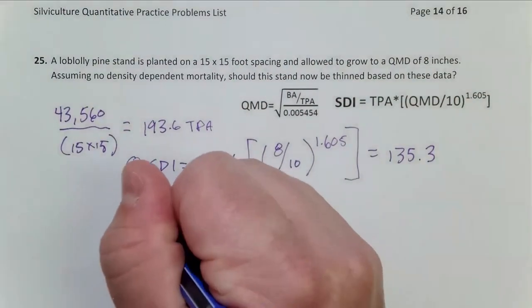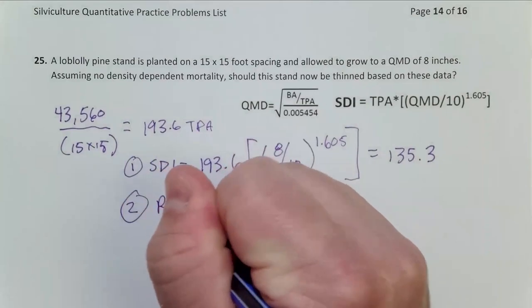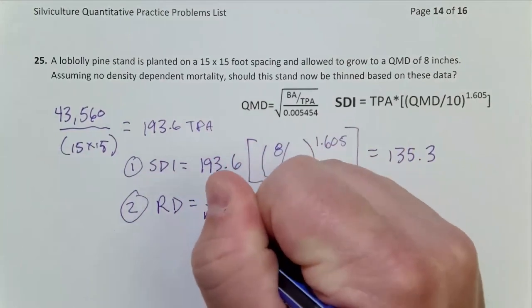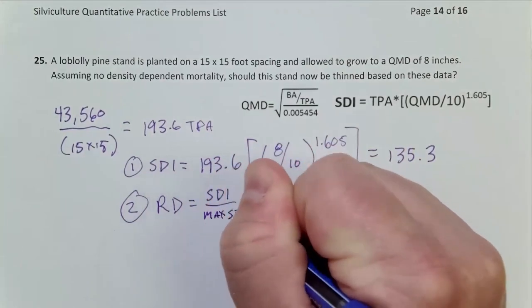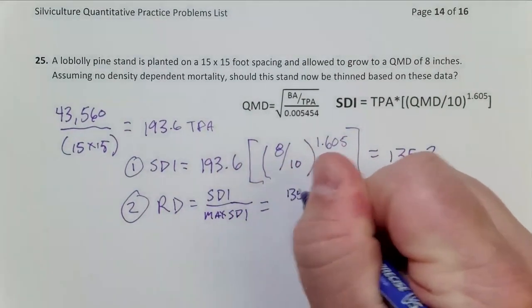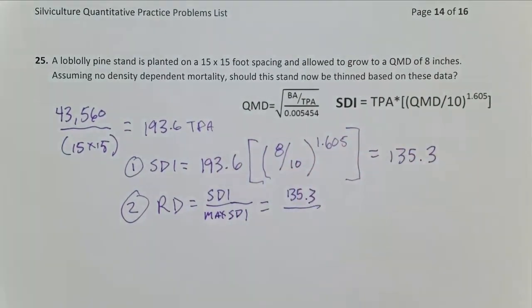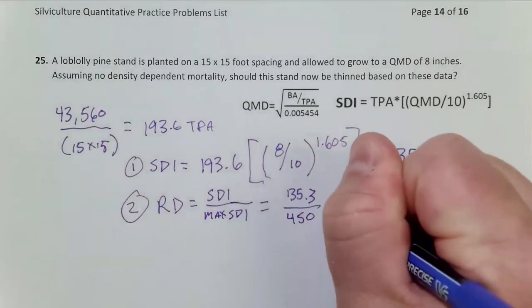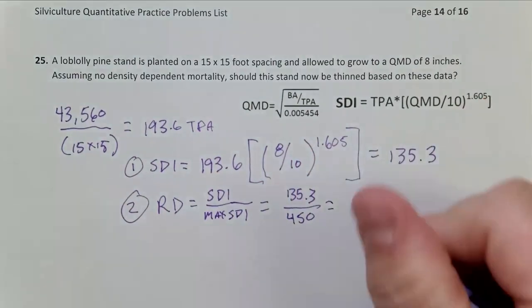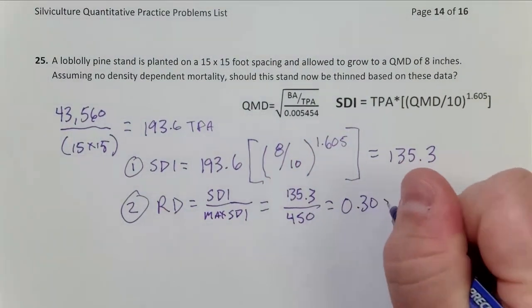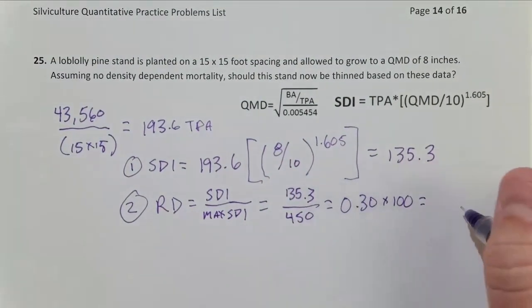Step two, relative density equals SDI over max SDI, which in this case is 135.3. And we have to memorize our max SDI for loblolly pine is 450. And this is going to equal 0.30. I can multiply that by 100 to express it as a percentage. So that equals 30% relative density.